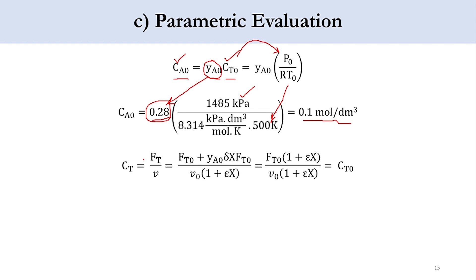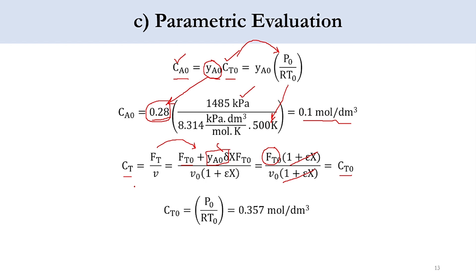For the total concentration CT: CT = FT/v. Since FT = FT₀(1 + ε·X) and the denominator is v₀(1 + ε·X), these cancel, giving CT = FT₀/v₀ = CT₀. This means total concentration remains constant throughout the system. CT₀ = P₀/(RT₀) = 0.357 mol/dm³.